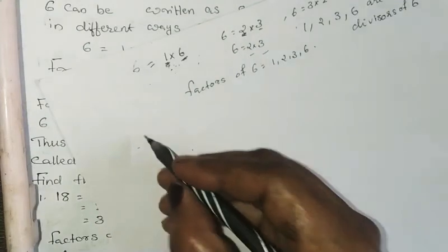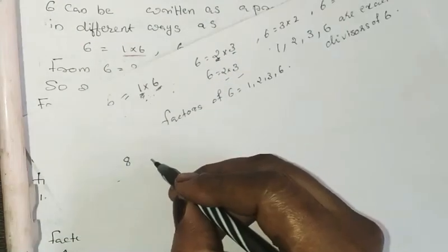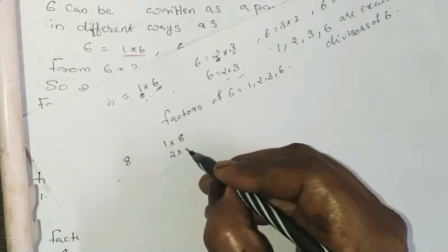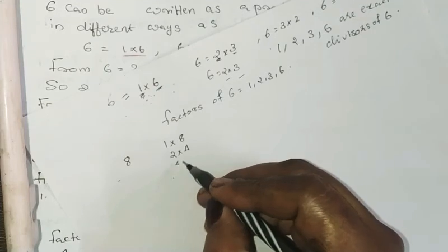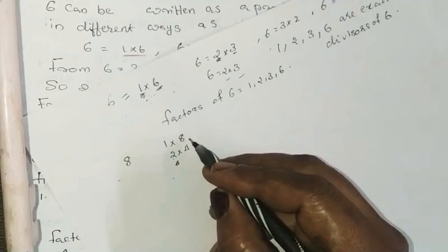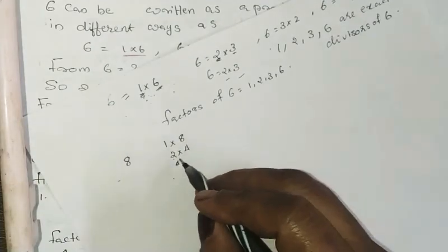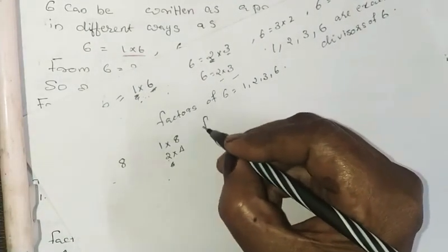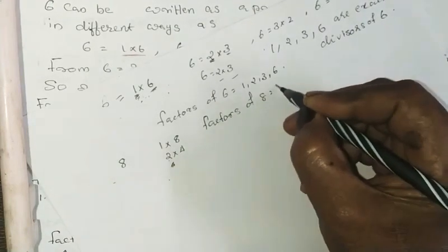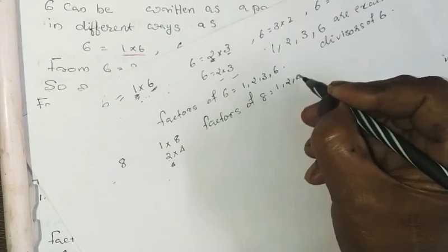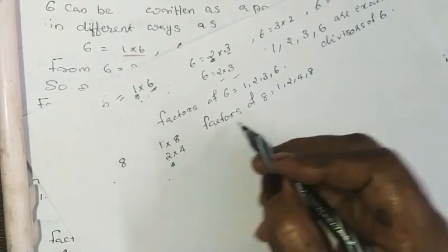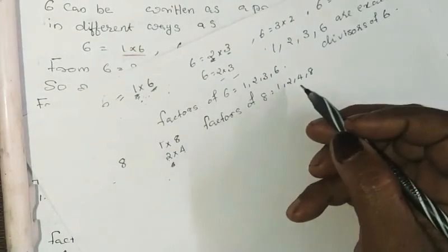Next, 8. 8 is written as 1 into 8, 2 into 4, 4 into 2, and 8 into 1. We write the factors in ascending order: 1, 2, 4, 8. The factors of 8 are 1, 2, 4, 8.